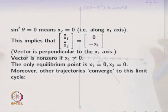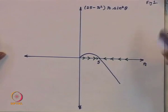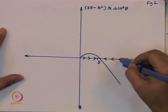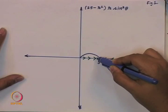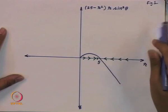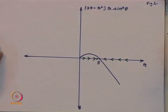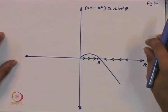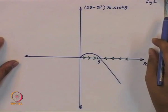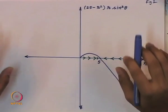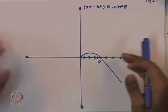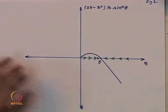From the r_dot versus r plot, for r = φ, any perturbation causes trajectories to approach r = φ from both sides (r > φ and r < φ), so the periodic orbit is stable. The limit cycle is also isolated — in a small region around r = φ there are no other periodic orbits. Therefore, r = φ is a stable limit cycle.